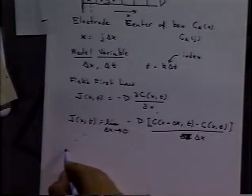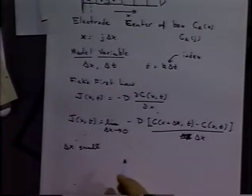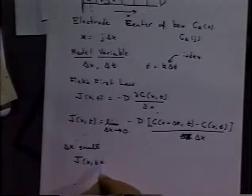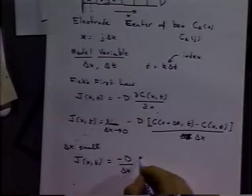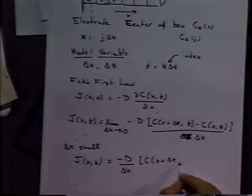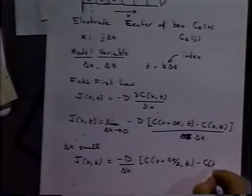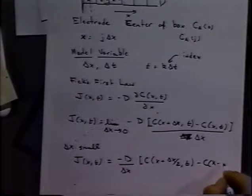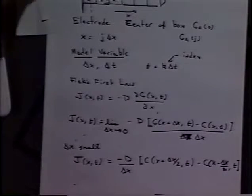Let's assume delta x is small enough so it works as expected. We can write our discretized Fick's first law as minus D over delta x, but for reasons we'll see later we make our equation slightly different: using concentration at x plus delta x over 2 minus concentration at x minus delta x over 2, all divided by delta x. You can see that's equivalent to the other form, but it works a little bit better.